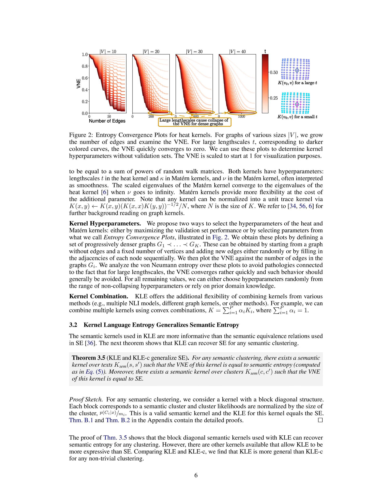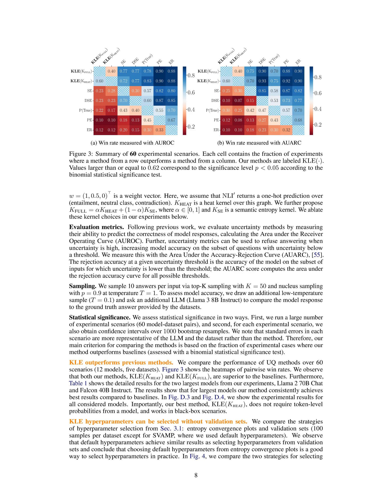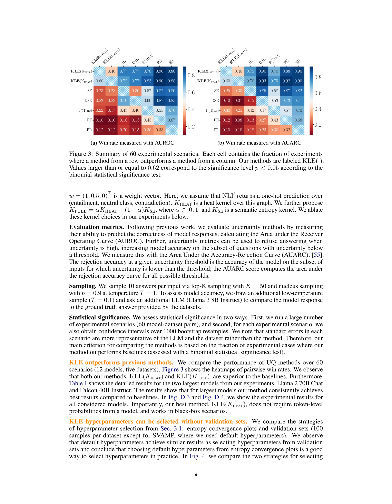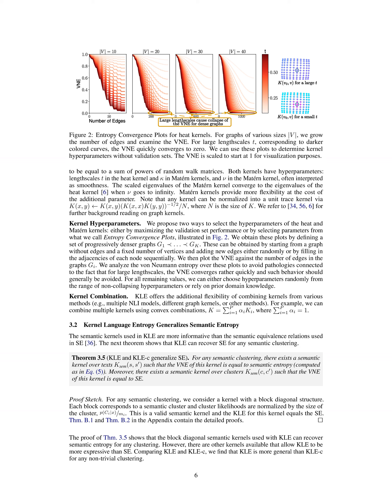The evaluation compares KLE with baseline methods such as semantic entropy, discrete semantic entropy, token predictive entropy, embedding regression, and P-true. Evaluation metrics include the area under the receiver operating curve (AUROC) and the area under the accuracy rejection curve (AUARC). Statistical significance is assessed over 1,000 bootstrap re-samples. KLE consistently achieves the best results compared to baselines, especially for the largest models like LLaMA-2 70B chat and Falcon-40B instruct.